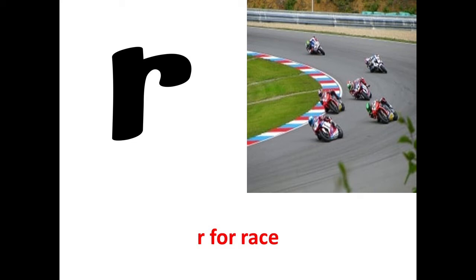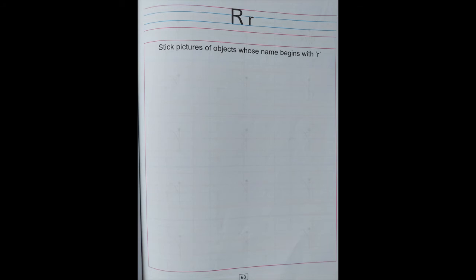These were a few things that begin with letter R. So children, are we ready for the home fun activity? I want you to open your pencil time English book to page number 63. By now I am sure you are able to open the pages on your own. Dear parents, kindly assist the child in opening the page and also write today's date on top of the page. Now children, let me read and tell you what you have to do on this page: stick pictures of objects whose name begin with R. So you have to stick the pictures of those objects that begin with letter R. For example, R for rabbit, R for rainbow, R for rain. I hope this activity was clear to you.